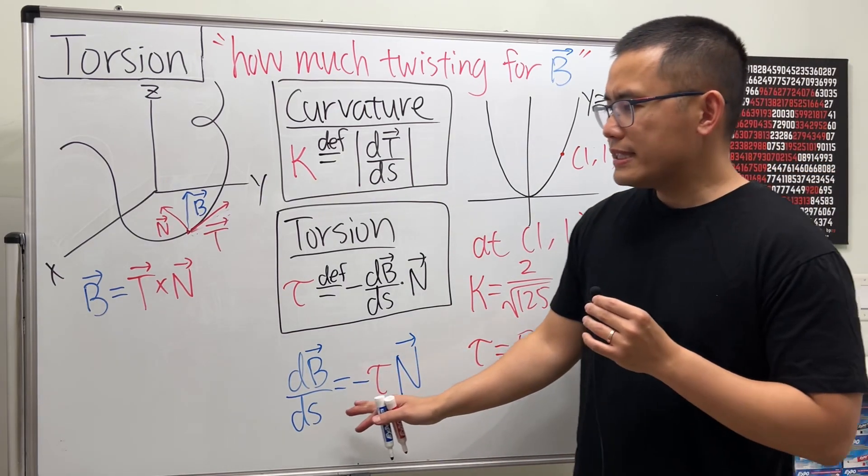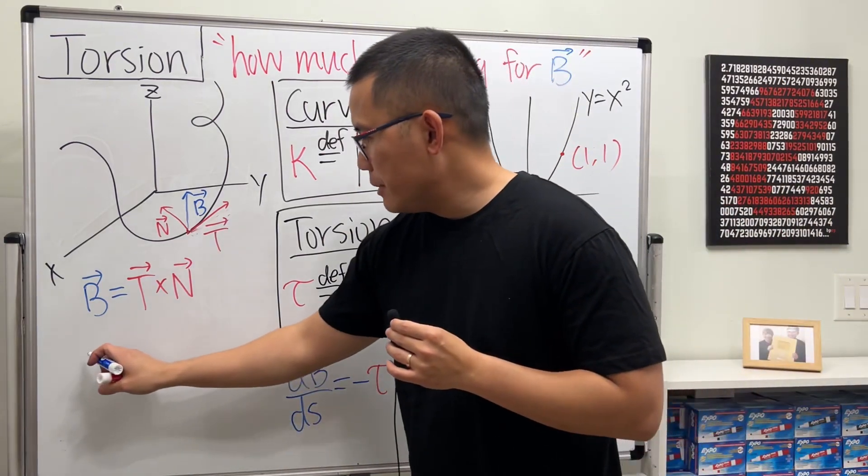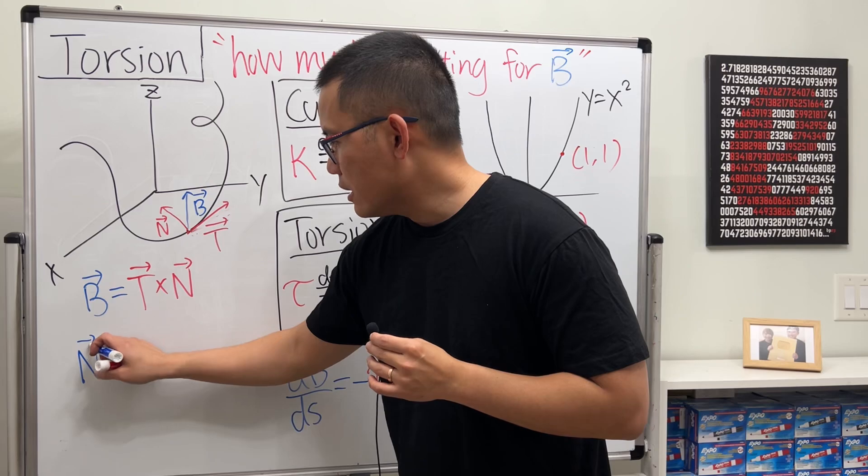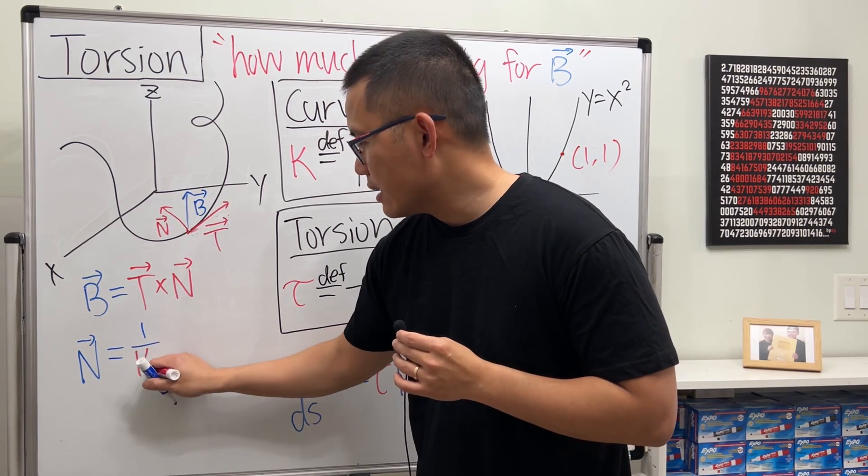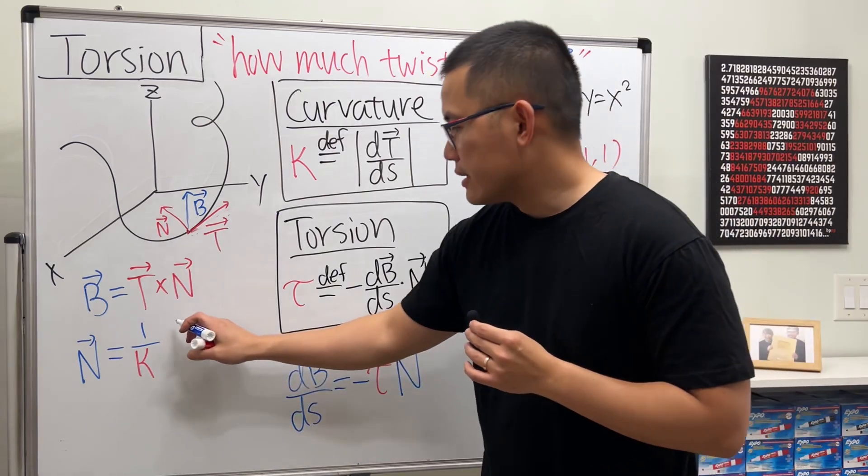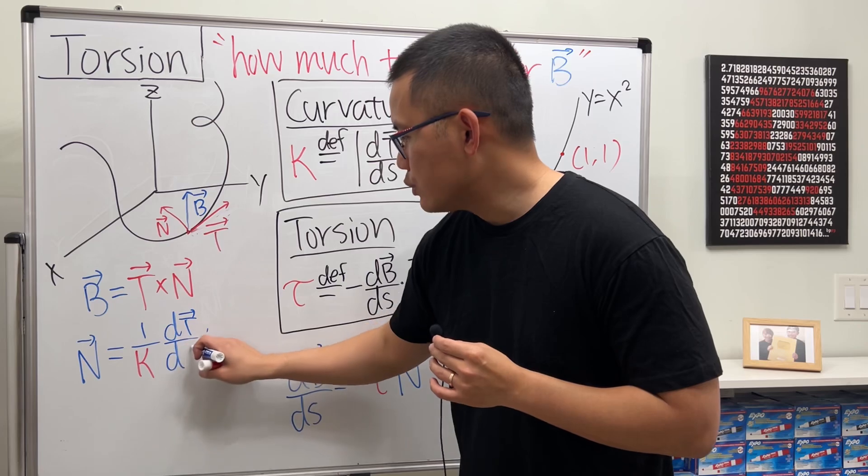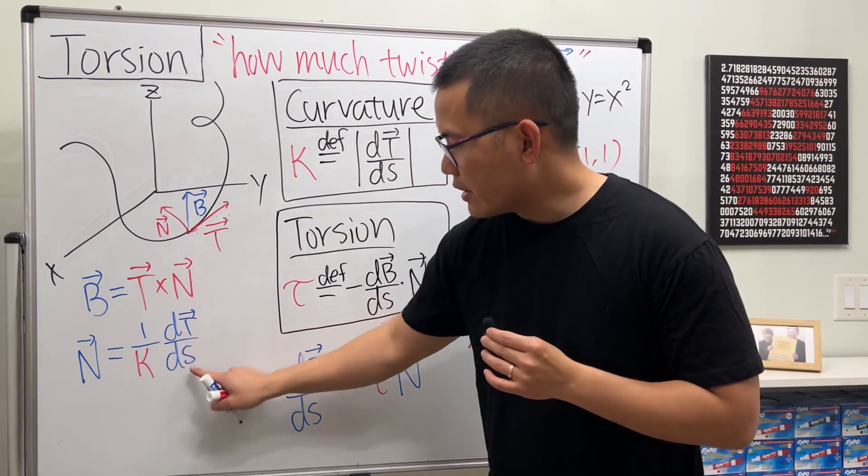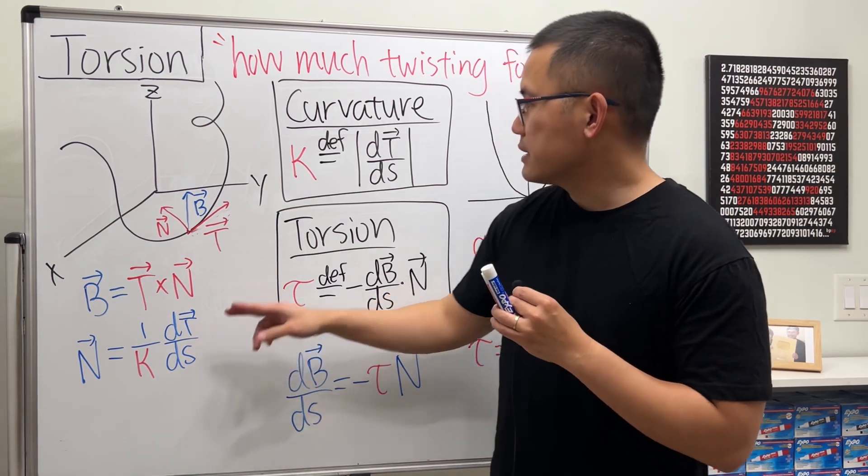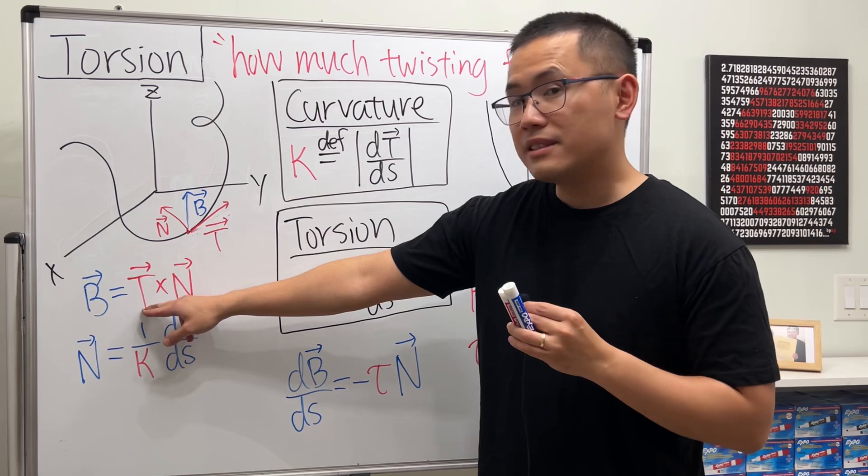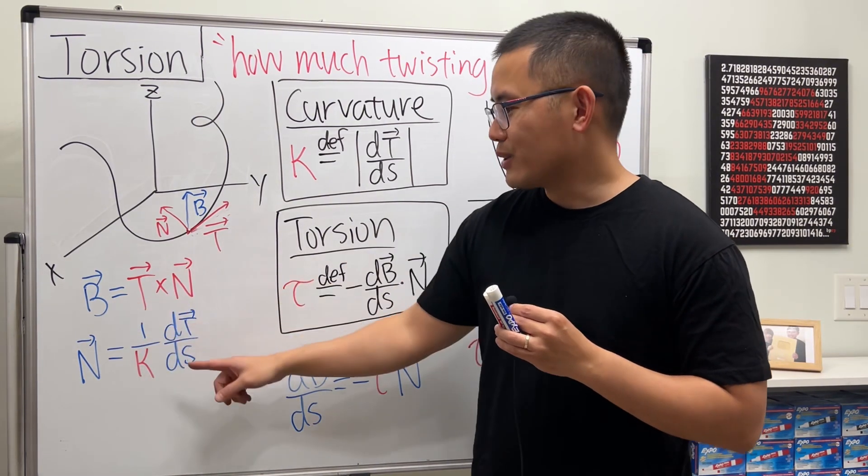And this is quite similar to, if you look at the curvature the following way: when we have the unit normal vector, this is defined to be 1 divided by the curvature κ times the derivative of the unit tangent vector with respect to s. This derivative is the derivative of the unit tangent vector with respect to s, which, because T has constant length, this thing will be normal to T. So that's why it's a normal vector.